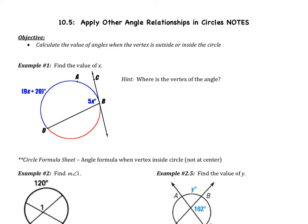So first I'd like to start with example one. This is a review — it's not a problem that you've seen before, but you should know how to do it. The hint is: where is the vertex of the angle? Well, our vertex is at B, so our vertex is on the circle.